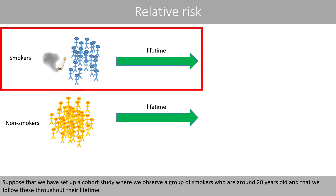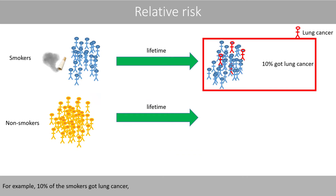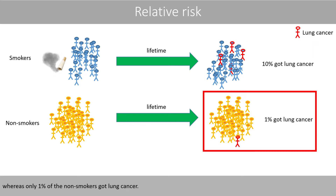Suppose that we would set up a cohort study where we observe a group of smokers who are around 20 years old and follow these throughout their lifetime. We also follow a similar group of people who are non-smokers. For example, 10% of the smokers got lung cancer, whereas only 1% of the non-smokers got lung cancer.